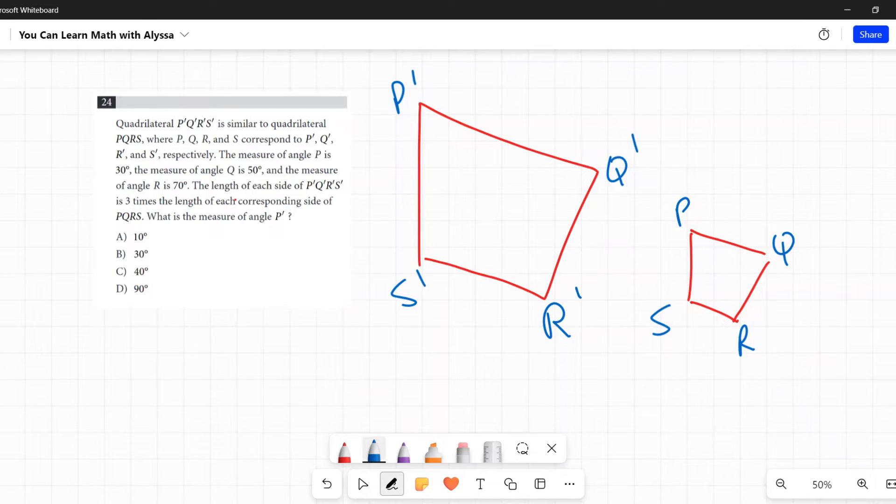Now similar figures are scale versions of each other, so you could scale up or scale down, make it bigger or smaller, and they would line up perfectly on top of each other. The other thing to know about them is that their corresponding angles are always congruent. So let's go and see what information they're given us with that in mind.